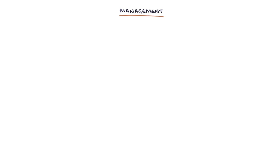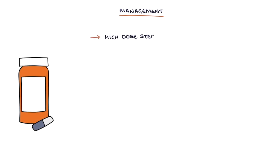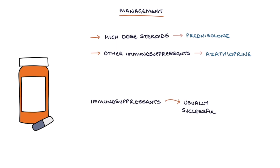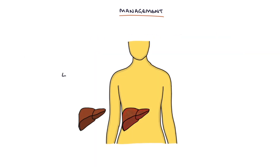Treatment is typically with high-dose steroids, for example prednisolone. Other immunosuppressants are also used, particularly azathioprine. Immunosuppressant treatment is usually successful at inducing remission or controlling the disease. Liver transplant may be required in end-stage liver disease.